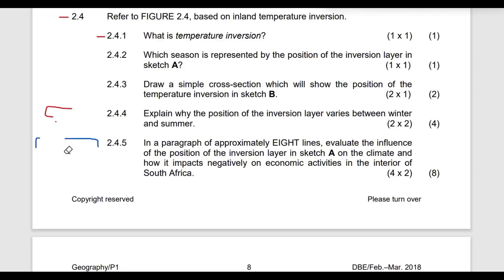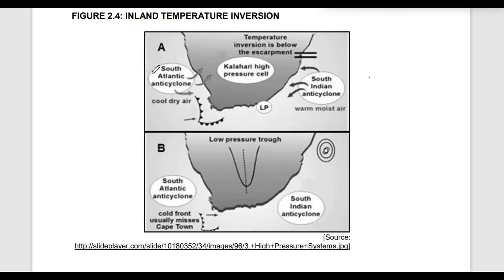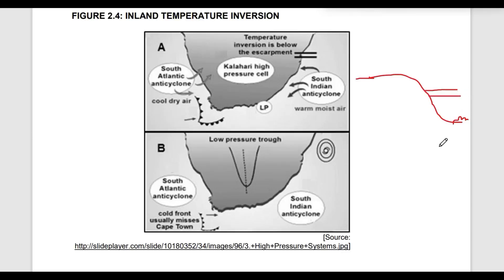Let's move to question 2.4.2, which asks: which season is represented by the position of the inversion layer in sketch A? Let's look at sketch A. The temperature inversion is below the escarpment. So this is the ocean, this is the escarpment going down, this is the plateau of South Africa on top, and this is the coastal area. The inversion layer is below the escarpment.